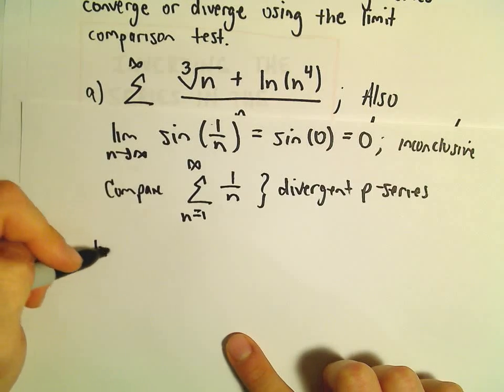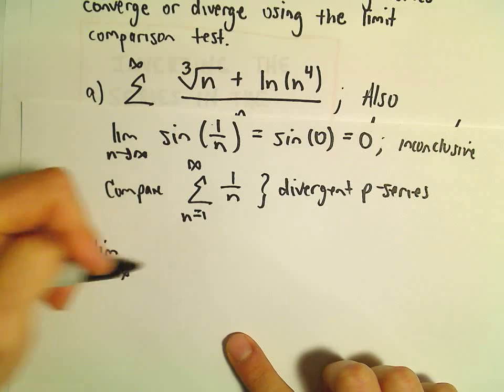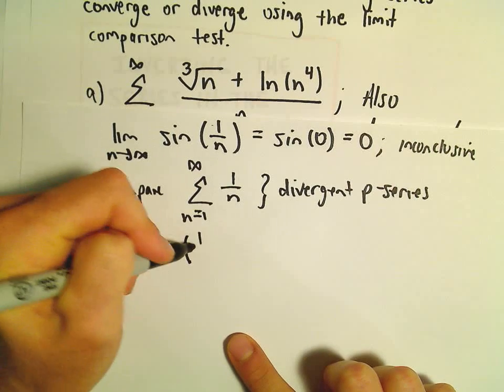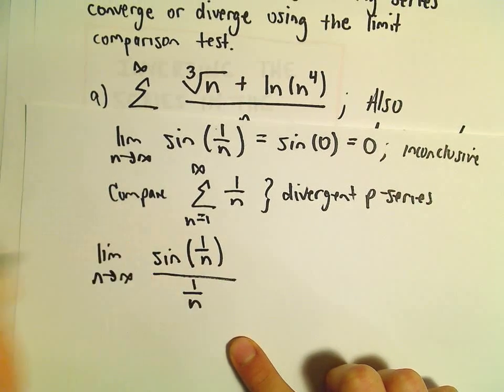Okay, so we can do the limit as n goes to infinity. Sine of 1 over n divided by 1 over n.